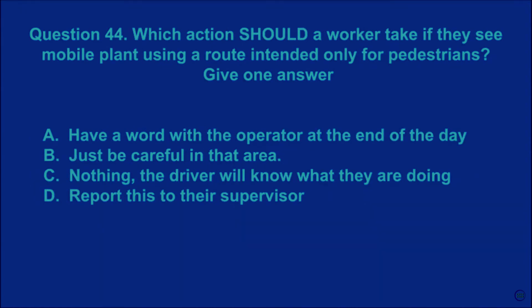Question 44: Which action should a worker take if they see mobile plant using a route intended only for pedestrians? Give one answer. A: have a word with the operator at the end of the day. B: just be careful in that area. C: nothing — the driver will know what they are doing. D: report this to their supervisor. The correct answer is D.